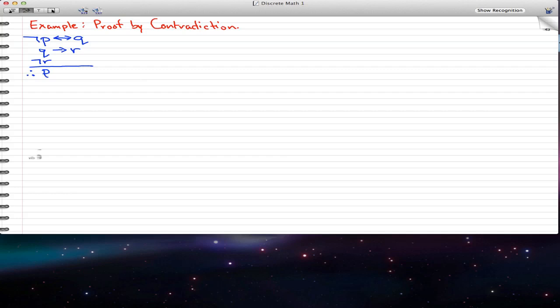In this video, I'm going to give an example of proof by contradiction. We're going to try to validate this argument, and what we're going to do first is assume that negation p of the conclusion p is going to be another premise.